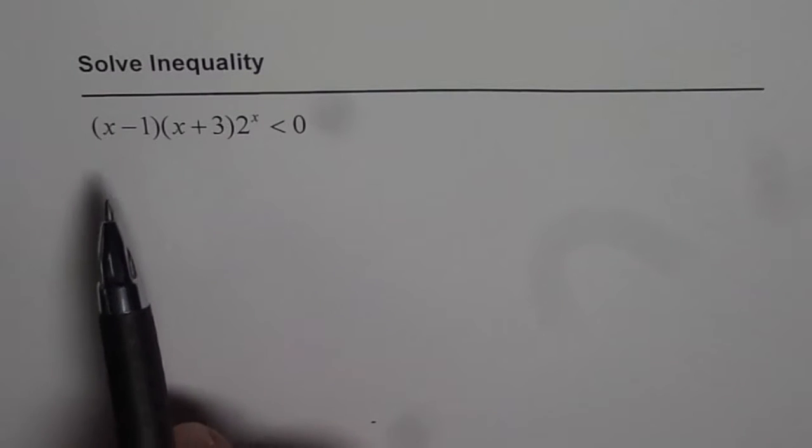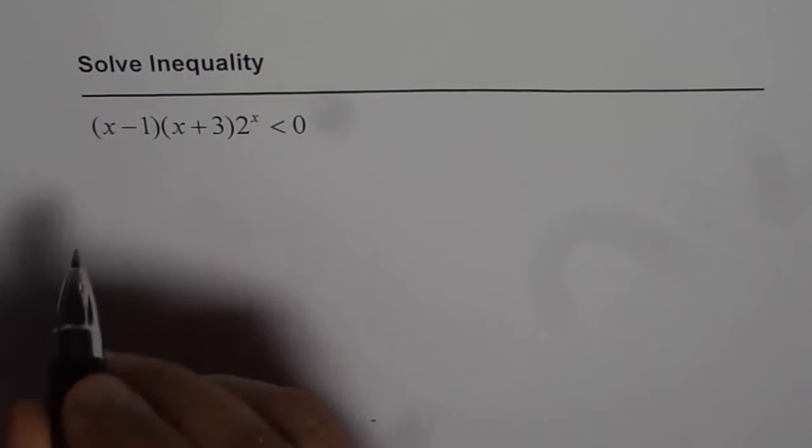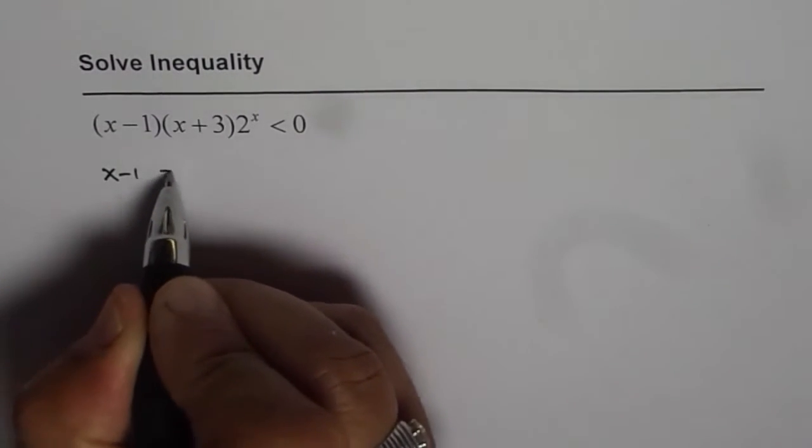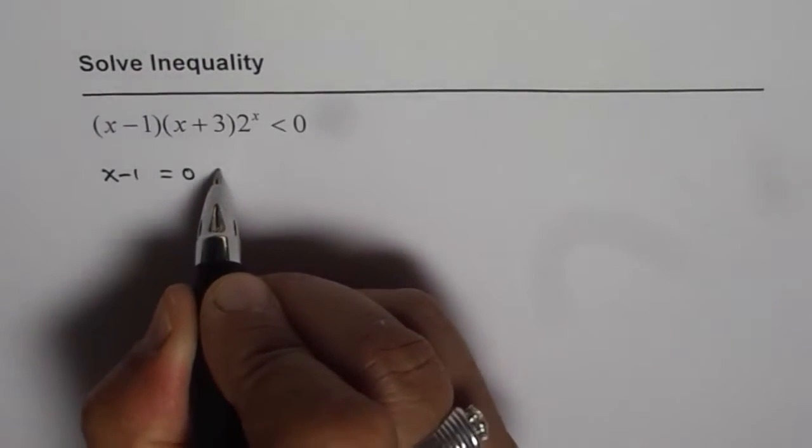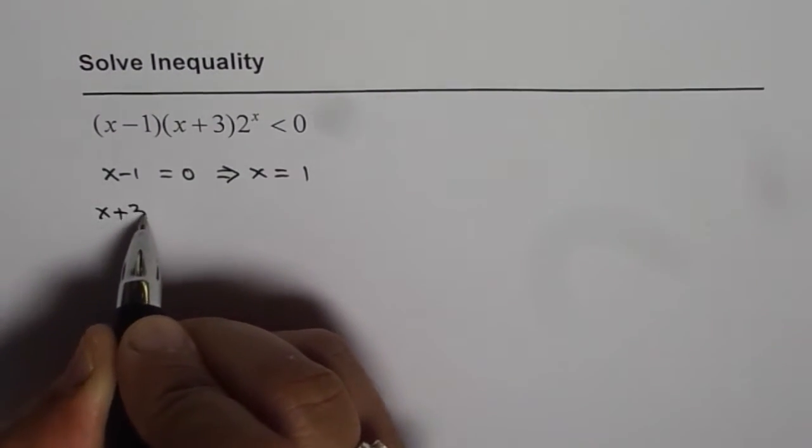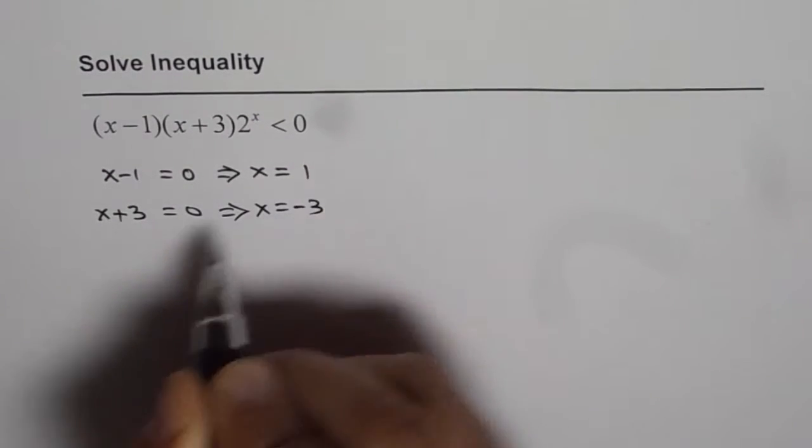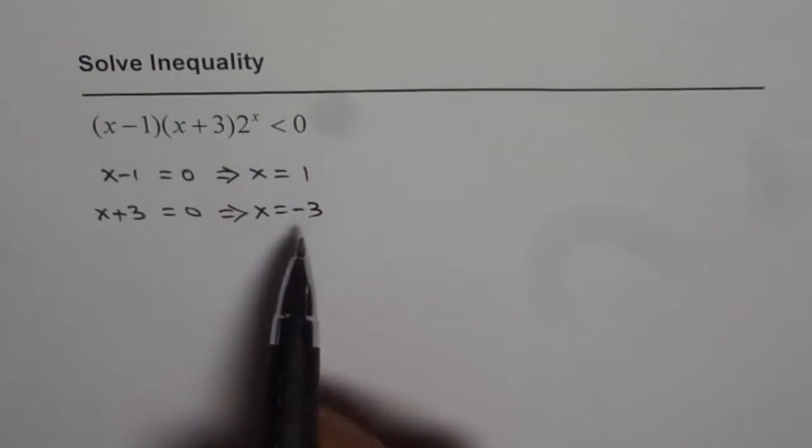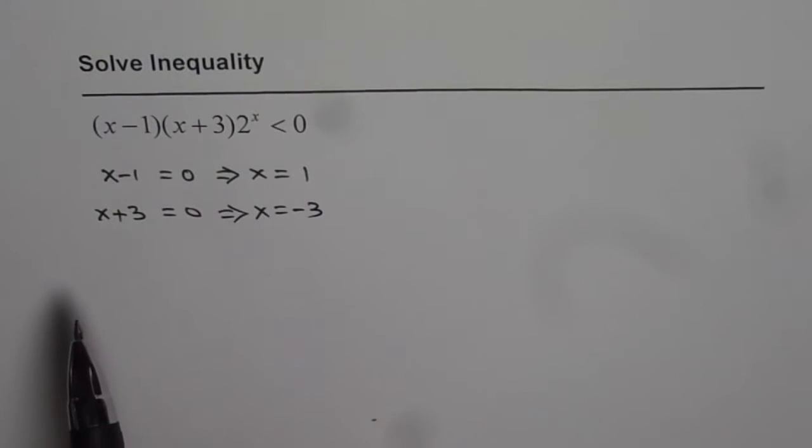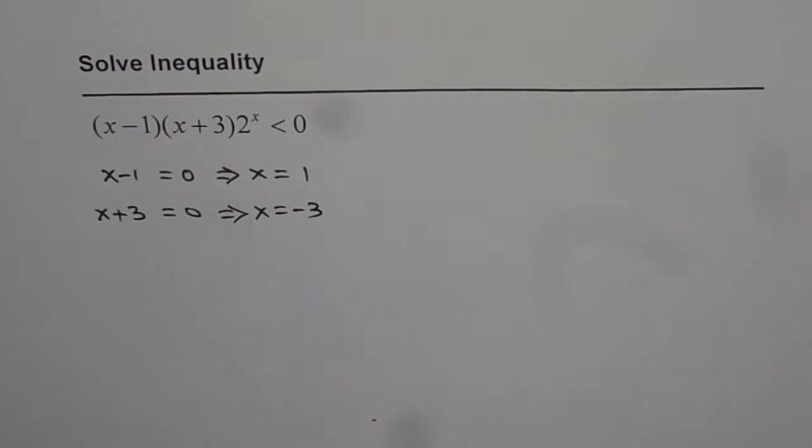Now what we can do is we can find the zeros for this equation. From this equation, x minus 1 equals 0 means that x is equal to 1, and x plus 3 equals 0 means x equals minus 3. So at these two points this expression will be 0. We are looking for the interval when this expression is less than 0.